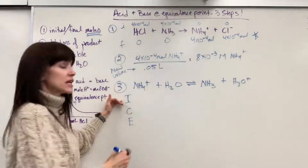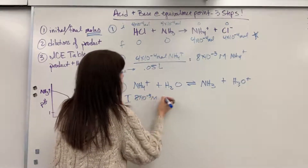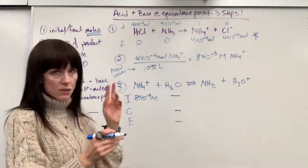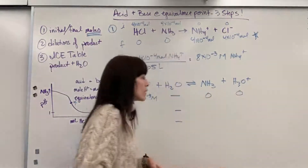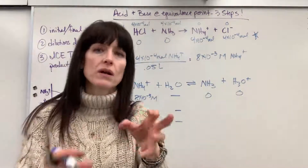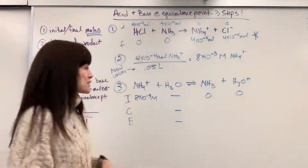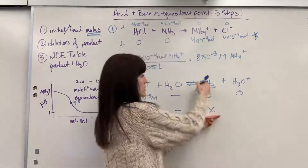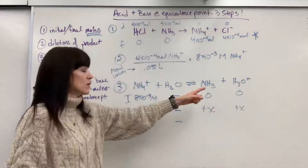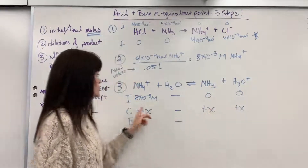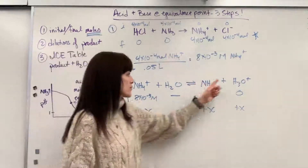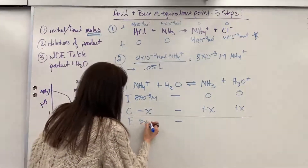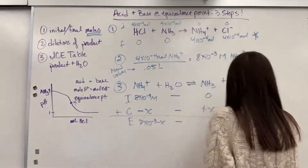Let's do our ICE table — Initial, Change, Equilibrium. My initial concentration is 8×10⁻³ molar — that's why we had to do that dilution step, to put it in molarity. Water is a liquid and doesn't impact equilibrium because liquids and solids aren't included in the equilibrium expression. I have zero of the ammonia and zero of the hydronium initially. Change: we're going to lose an amount X of the reactant. For every one mole I lose, I gain X of ammonia and X of hydronium — those coefficients are all understood to be 1. For equilibrium, we add I plus C: 8×10⁻³ − X, and 0 + X = X for each product.